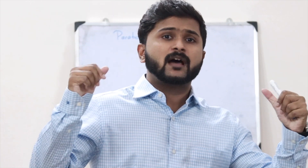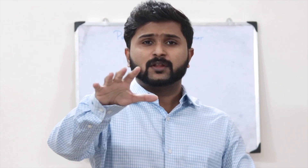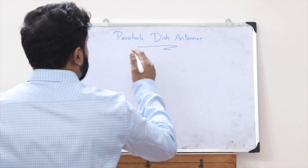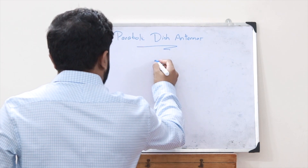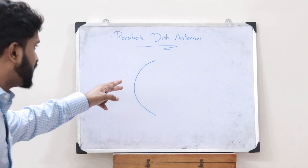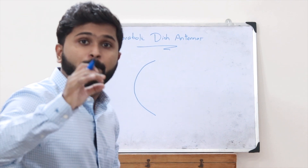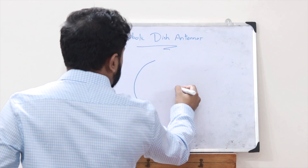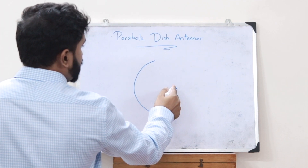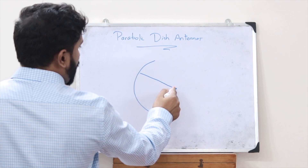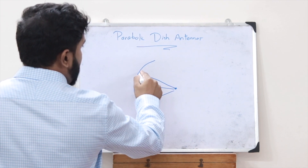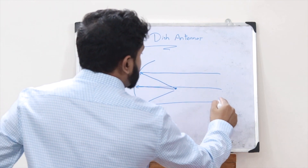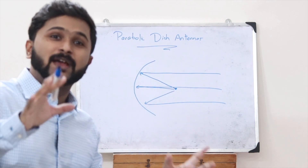First, let us understand the principle behind a parabolic dish antenna. Whenever we take a reflector in the shape of a parabola, if a point source is placed at this parabola's focal point, then when this point source emits particular radiations onto this parabolic reflector, these will get reflected back as rays which are parallel to each other.